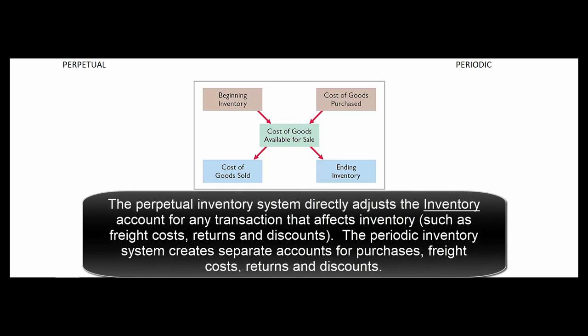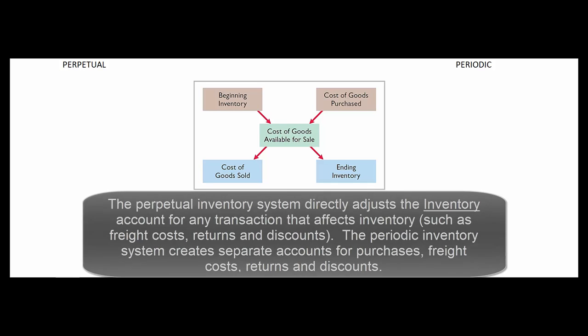The perpetual inventory system directly adjusts the inventory count for any transaction that affects inventory, such as freight costs, returns, and discounts. The periodic inventory system, on the other hand, does not do this. Instead, it creates separate accounts for purchases, freight costs, returns, and discounts.